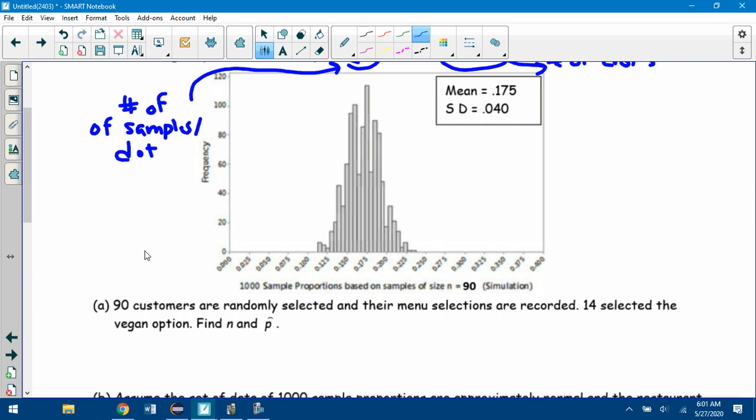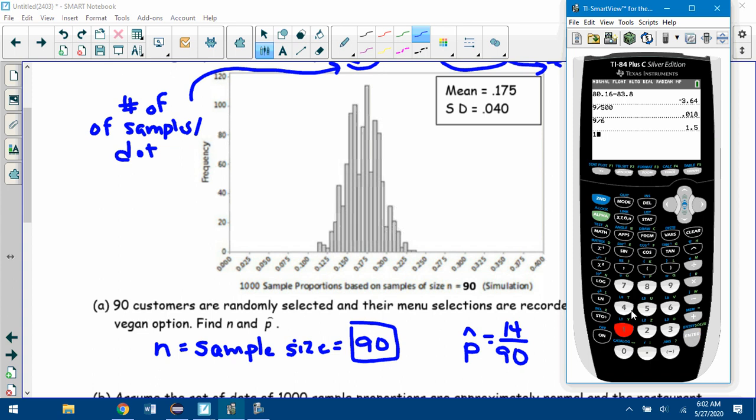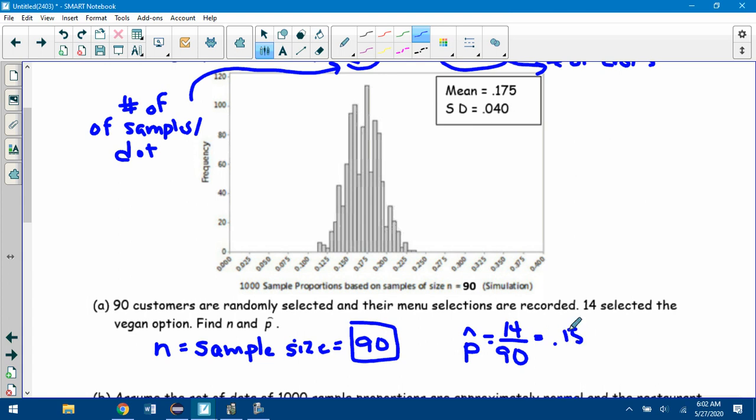It says 90 customers are randomly selected and their menu selections are recorded. 14 selected the vegan option. Find N and P hat. Remember what these terms are. N is always sample size. So what would N be here? It would be 90, because each sample size is 90. It's not the number of dots. It's this individual sample size. And P hat is the individual sample proportion. In this specific sample we're talking about, 14 out of 90 preferred vegan. So if I do 14 out of 90, it might help to see it as a proportion. Let's type it into the calculator. 14 out of 90, 0.15 repeating, about 15-ish percent, 15, 16 percent.